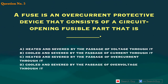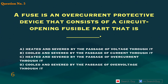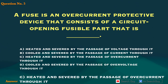Question 6. A device that consists of a circuit opening fusible part that is blank. A. Heated and severed by the passage of voltage through it. B. Cooled and severed by the passage of current through it. C. Heated and severed by the passage of overcurrent through it. D. Cooled and severed by the passage of overvoltage through it. Answer: C. Heated and severed by the passage of overcurrent through it.